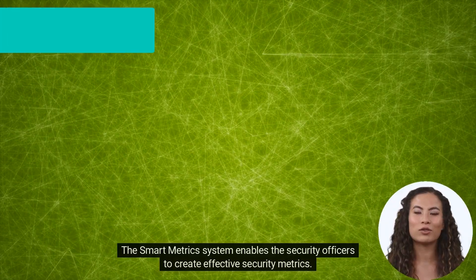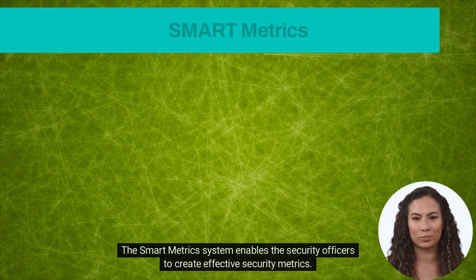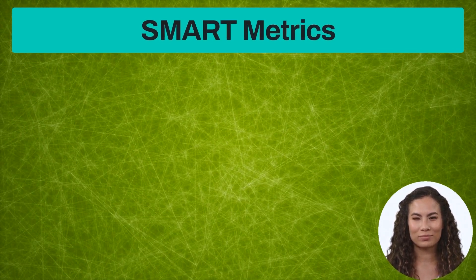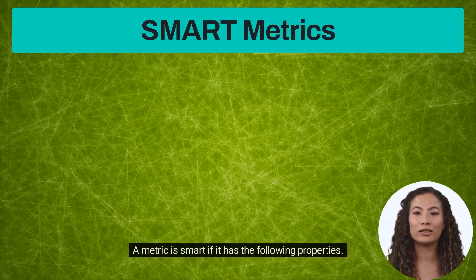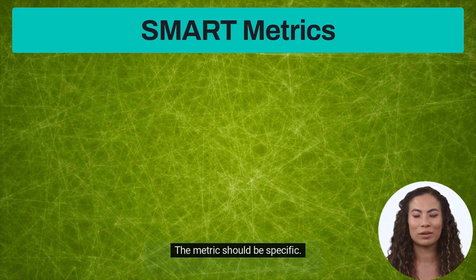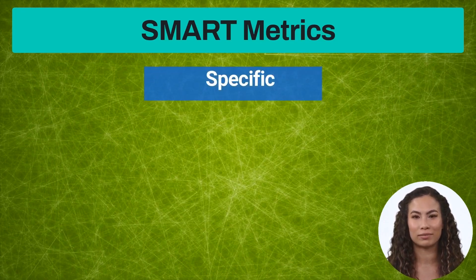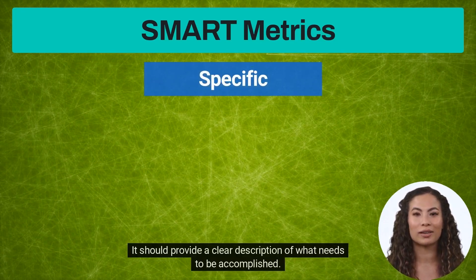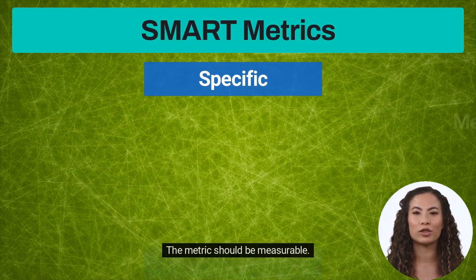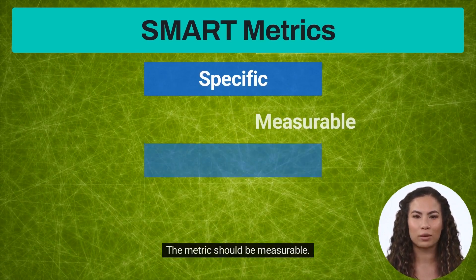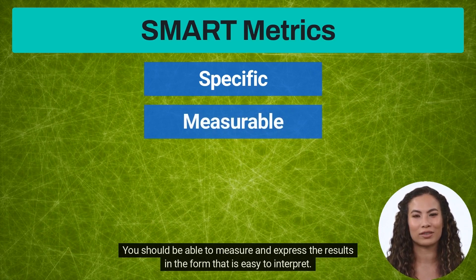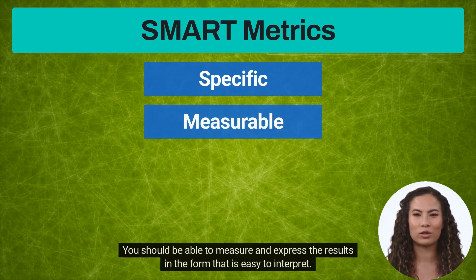The SMART metrics system enables security officers to create effective security metrics. A metric is SMART if it has the following properties. The metric should be specific — it should provide a clear description of what needs to be accomplished. The metric should be measurable — you should be able to measure and express the results in a form that is easy to interpret.